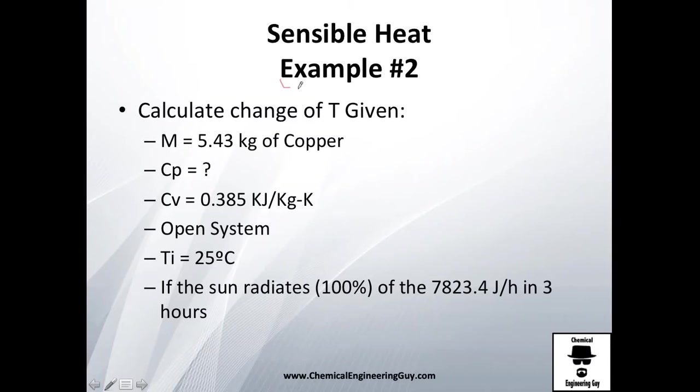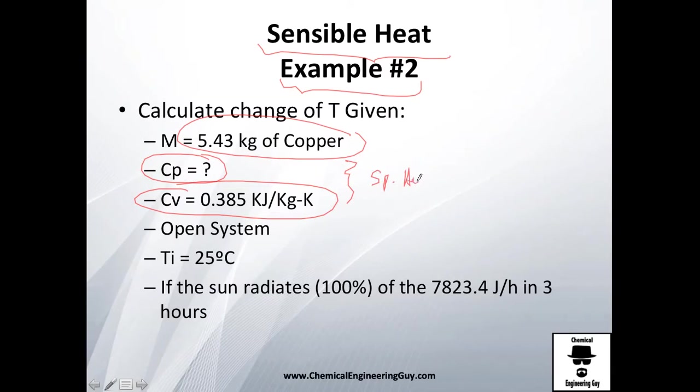Let's continue with example number two. We already saw example number one of sensible heat; if you missed it, go check it out. If you're following through, we're going to be speaking about the same amount of copper, 5.43 kilograms. We don't know Cv, but we do have the Cv data, the specific heat capacity—how much heat that substance can store until it changes one Celsius.